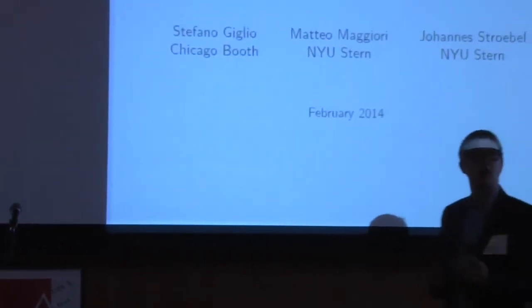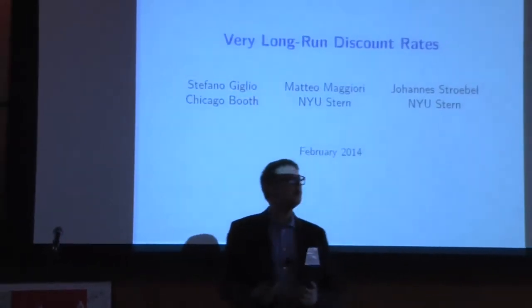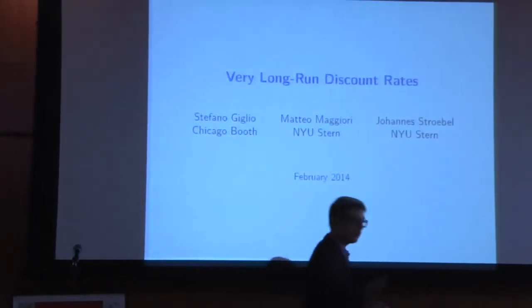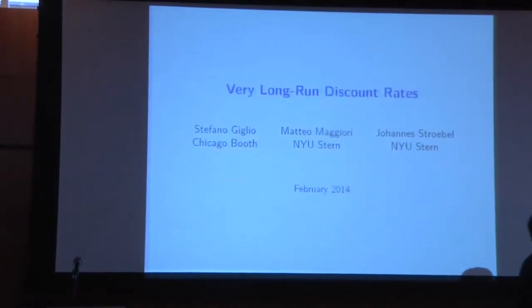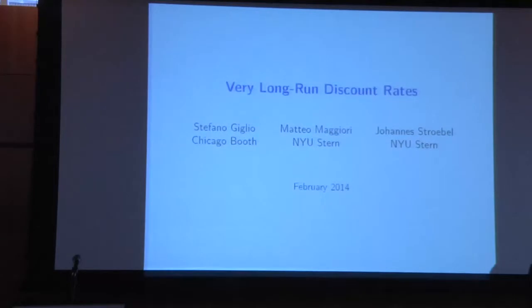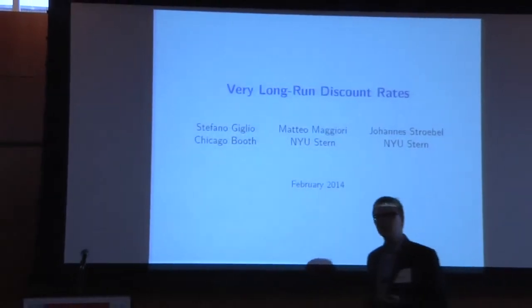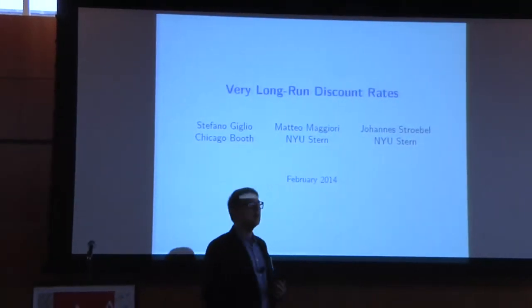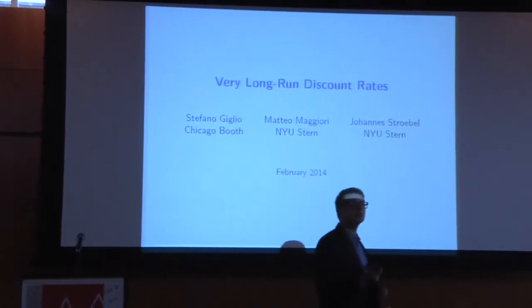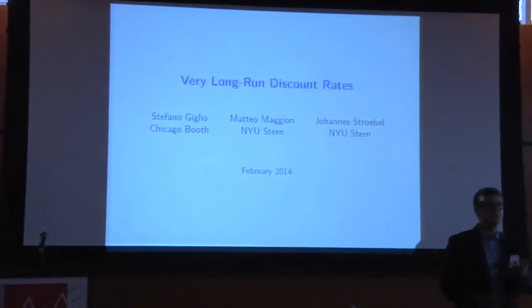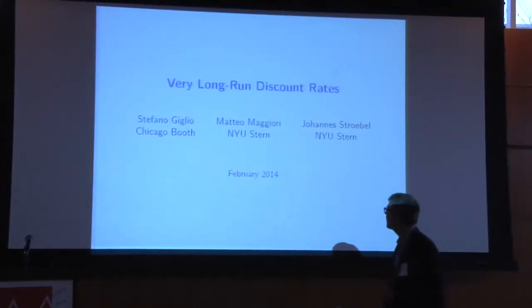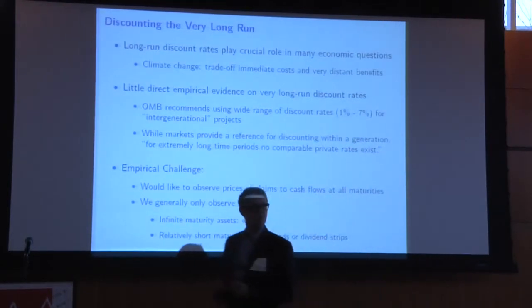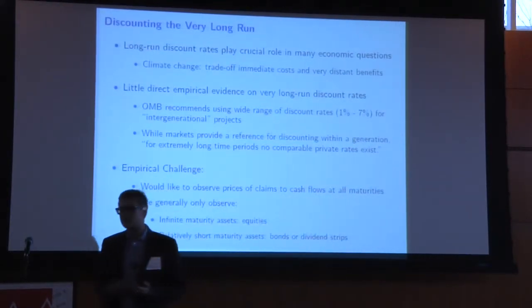Thank you for inviting me to talk about this work. It's joint work with Stefano and Matteo, and what we're trying to do in this paper is estimate how households discount cash flows that occur in the extreme long run — where by the very long run we mean cash flows that occur 100, 200, or 300 years into the future. Beyond the obvious implications for asset pricing, those discount rates are a crucial input into many economic questions we're facing.